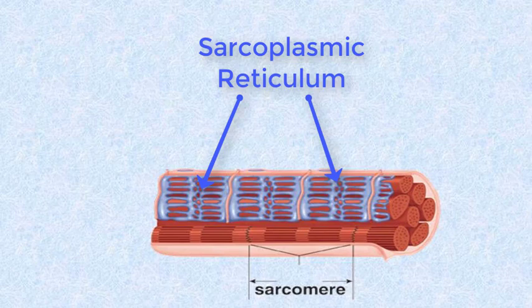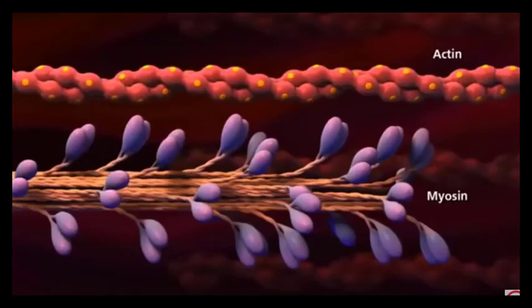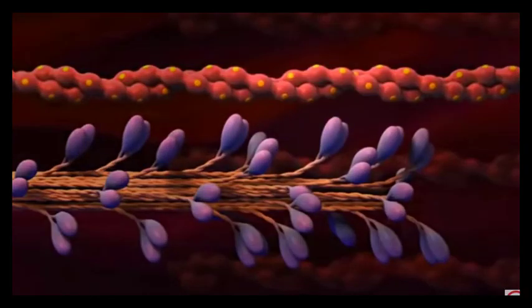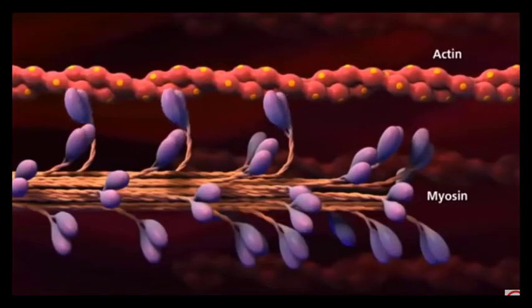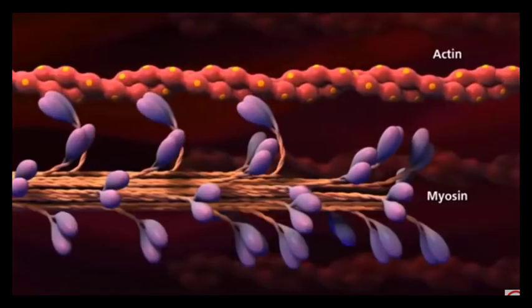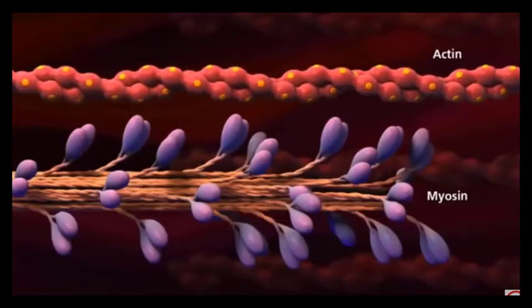To produce contractile force, myosin associates with actin filaments, rotating a little and then pulling the filaments across each other like oars propelling a boat.